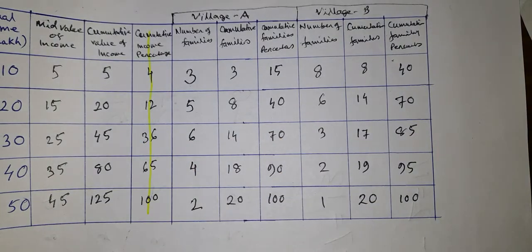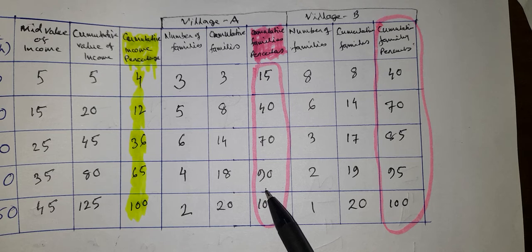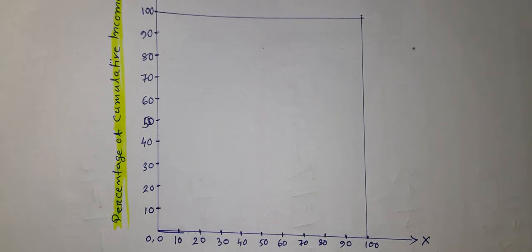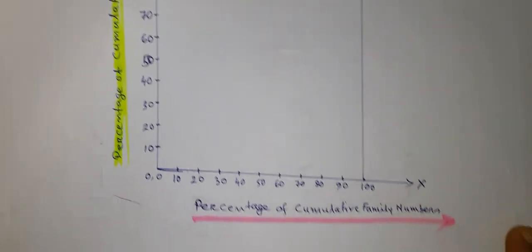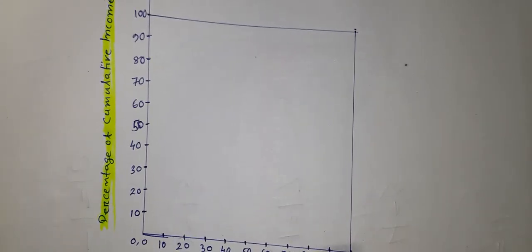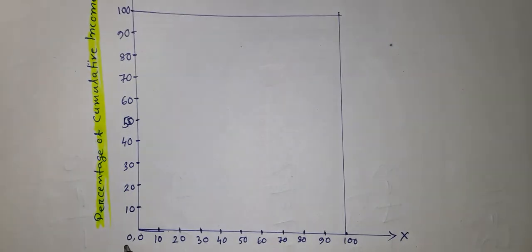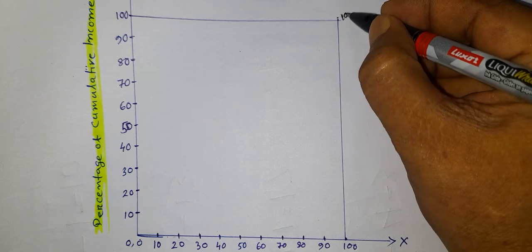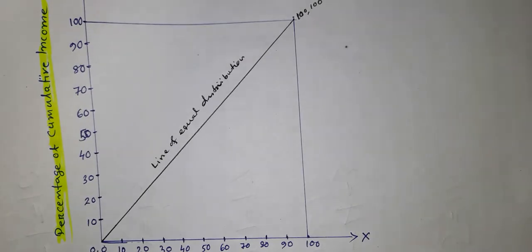Now we put the cumulative income percentage on the vertical axis and the cumulative family percentage on the horizontal axis for villages A and B. The diagram has 0 to 100% on both axes, so the origin is (0, 0) and the top-right corner is (100, 100). The diagonal line shows the line of equal distribution.